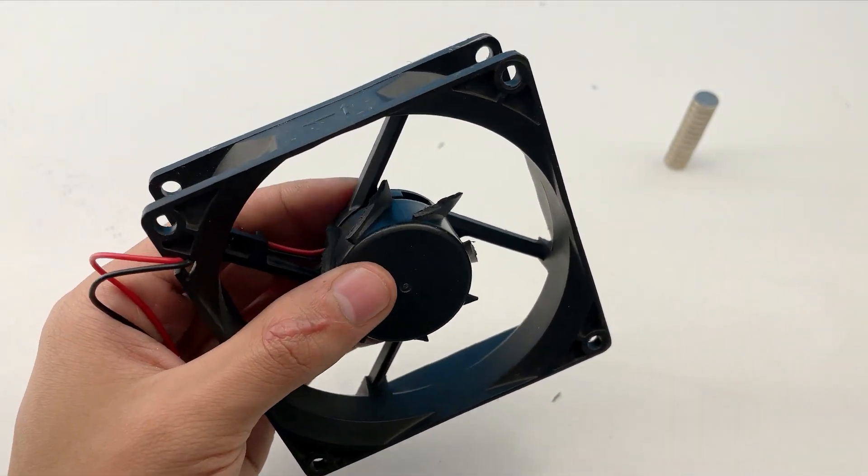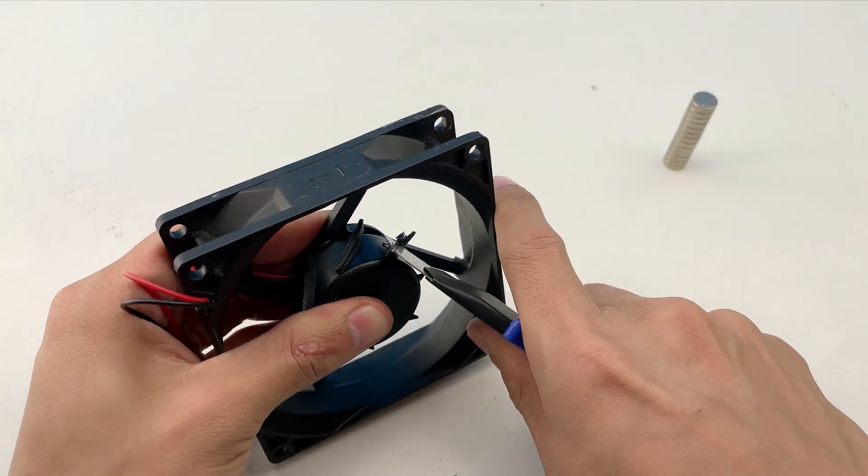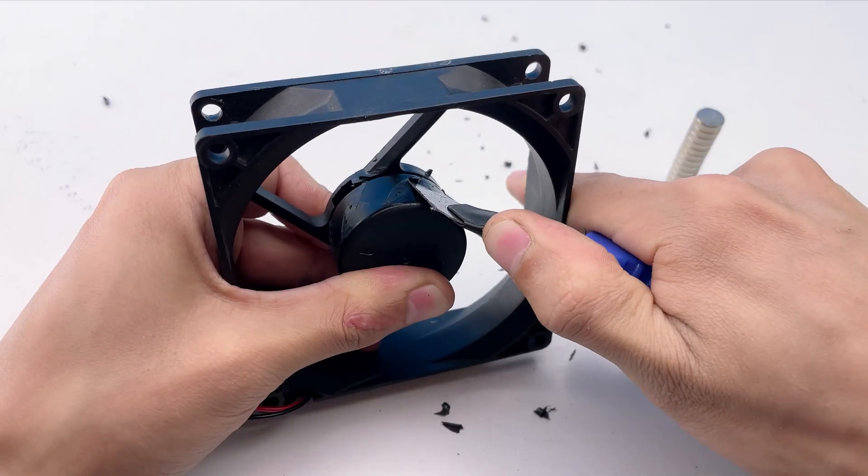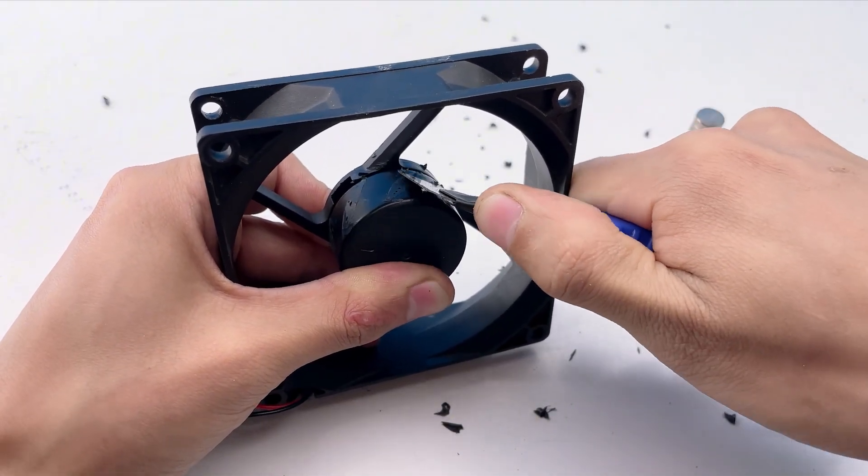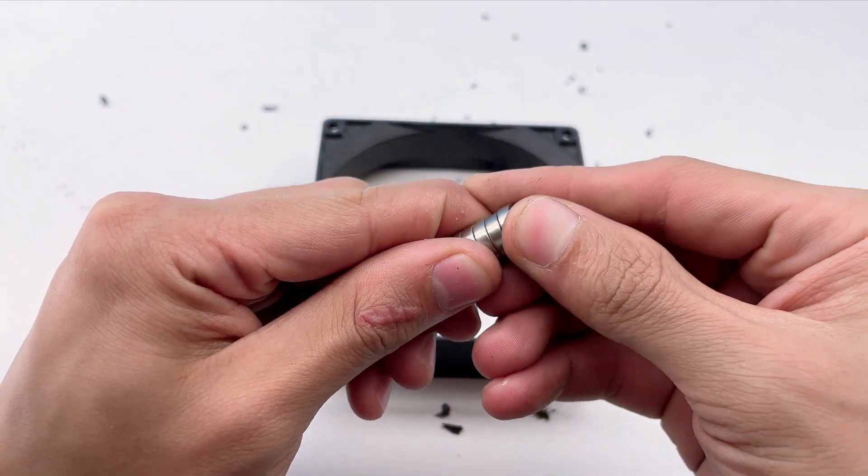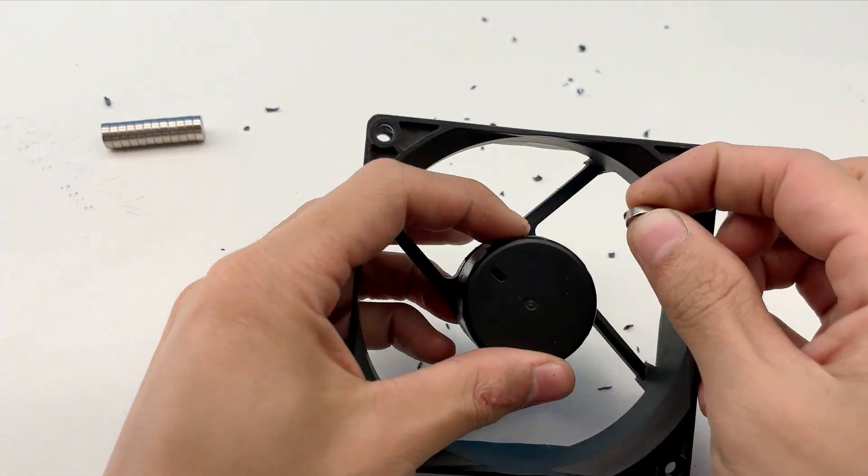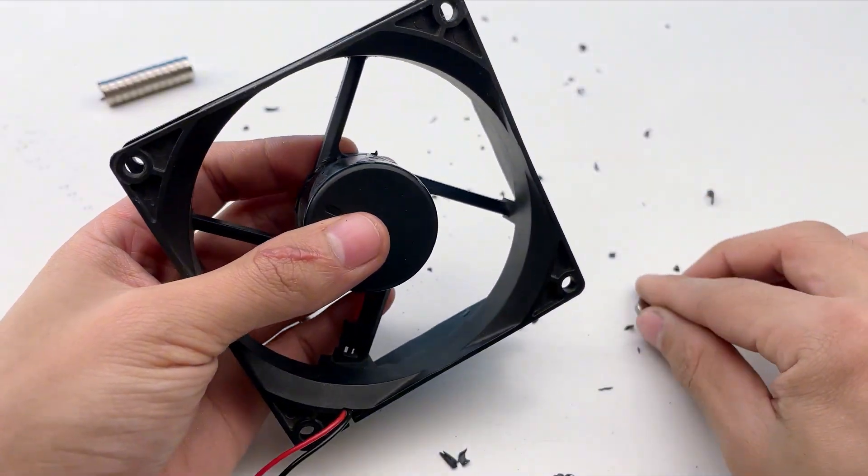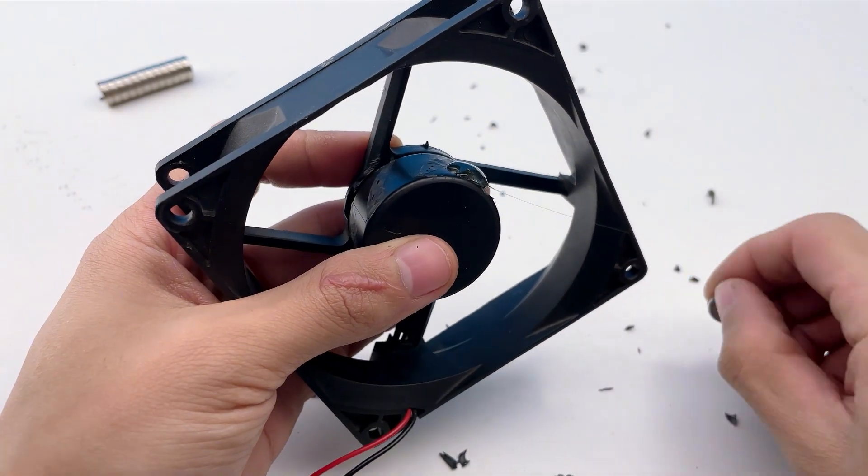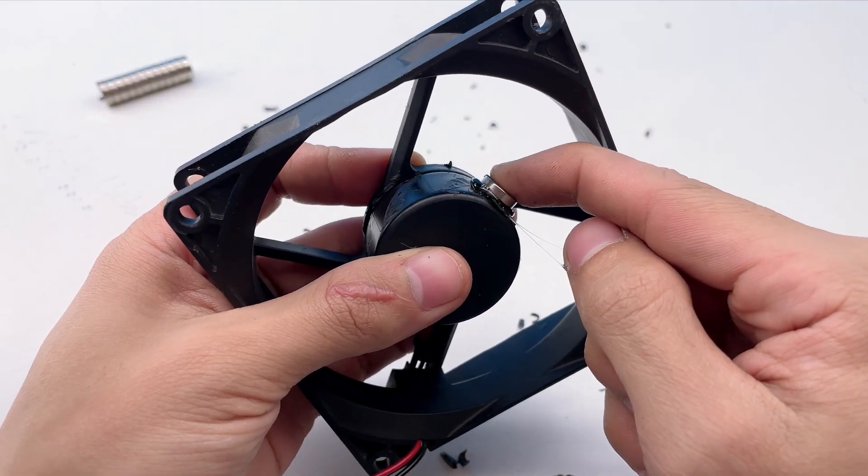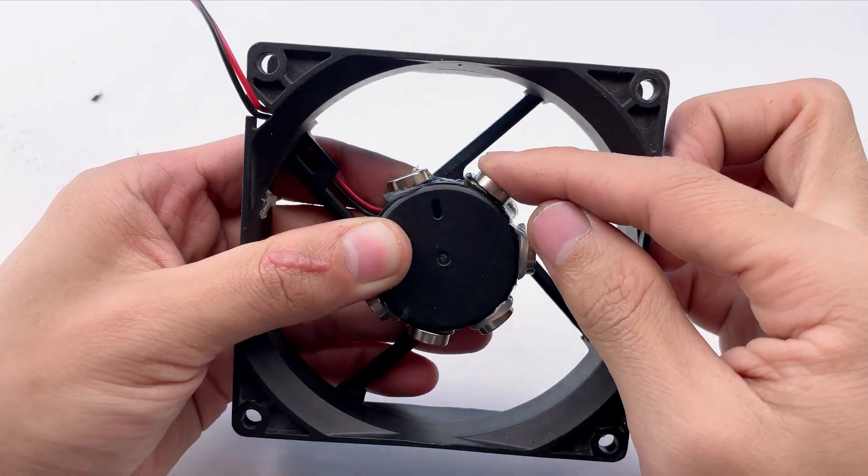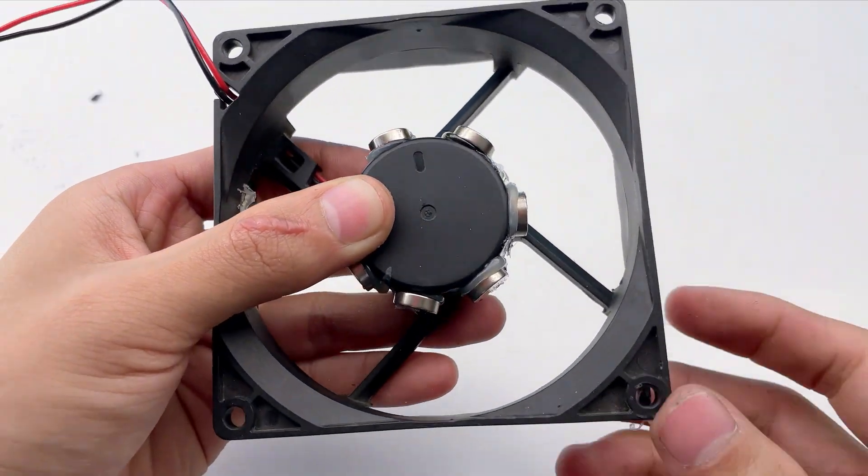Around the rotor, there's still many leftover edges from fan blades. I need to remove all of them completely. Once every remaining piece of fan blades is trimmed off, I'll attach the magnets around the rotor using hot glue to keep them firmly in place. This number of magnets is enough.